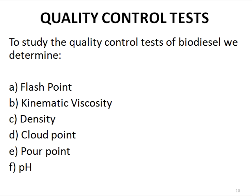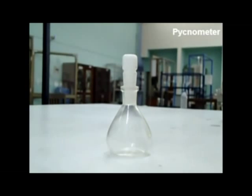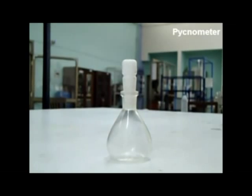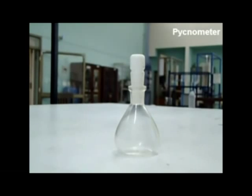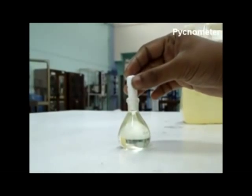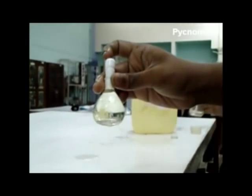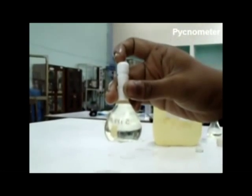Quality control tests: A pycnometer, also called a specific gravity bottle, is a device used to determine the density of a liquid. It is usually made of glass with a close-fitting ground glass stopper with a capillary tube, so that air bubbles may escape. First measure the weight of the empty pycnometer, then pour biodiesel up to the brim, put the cap on, and measure the weight again. Divide the weight difference by 25 ml to get the density.